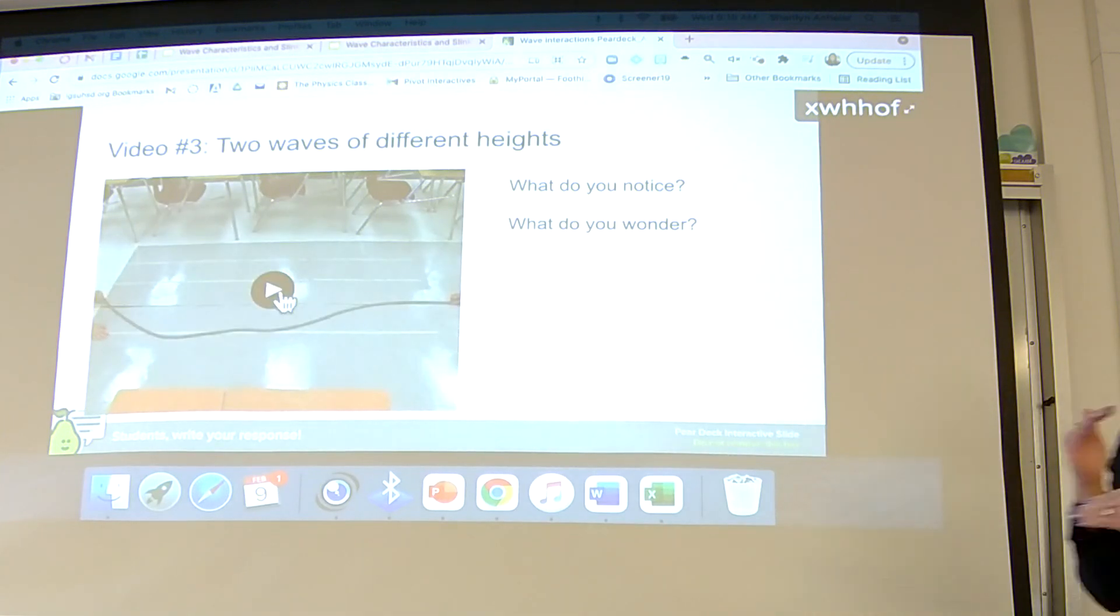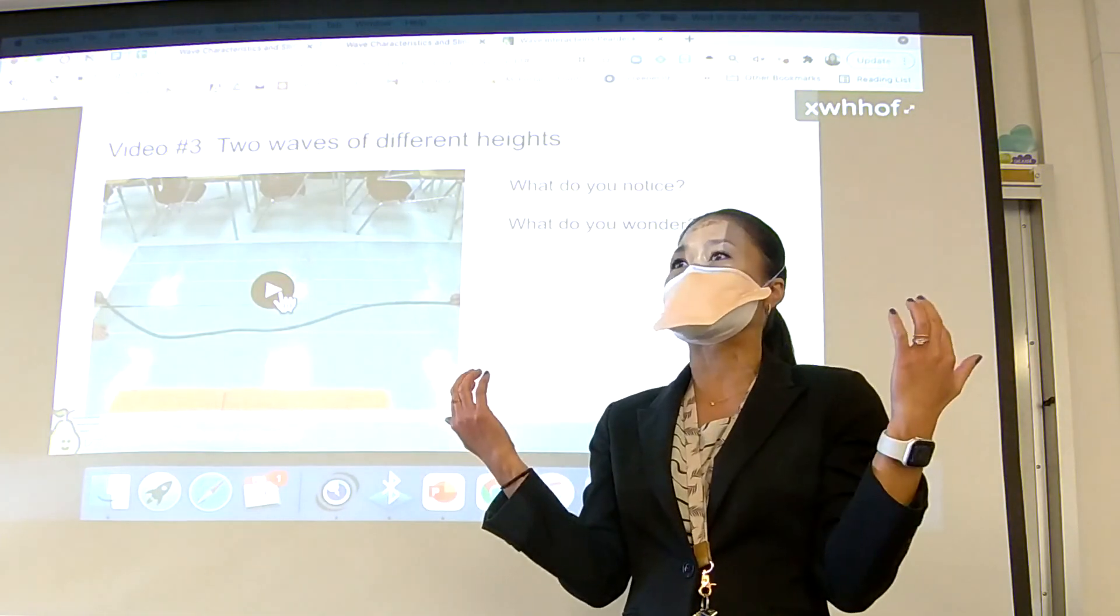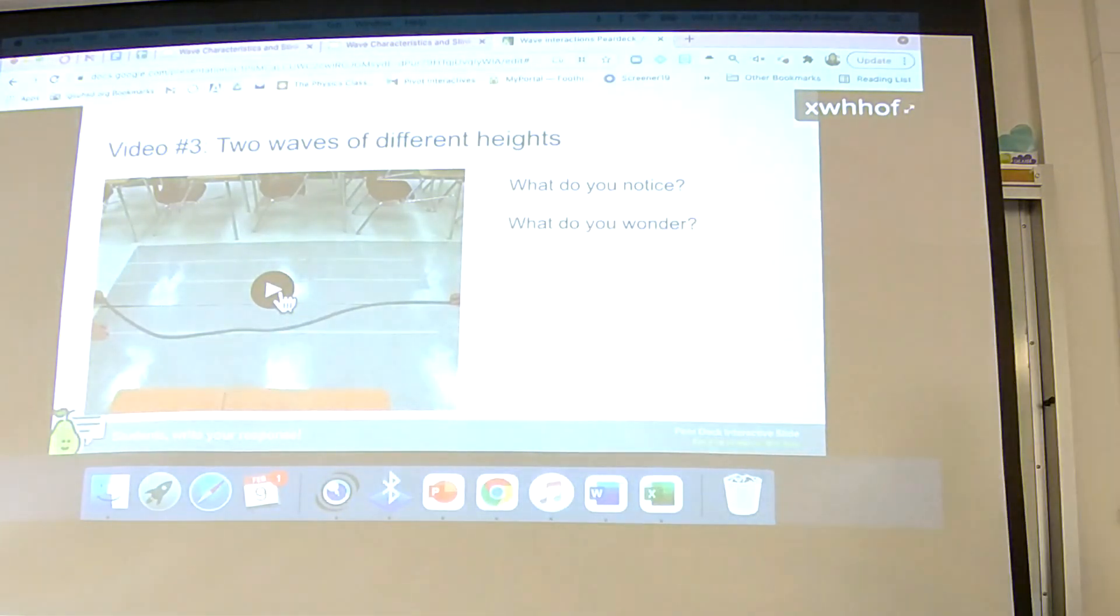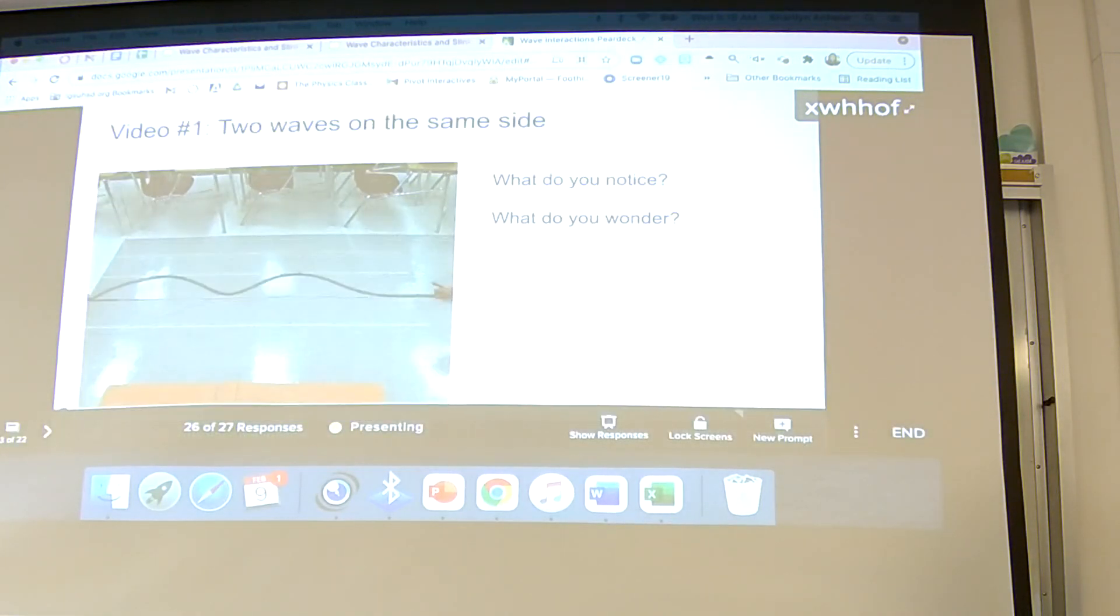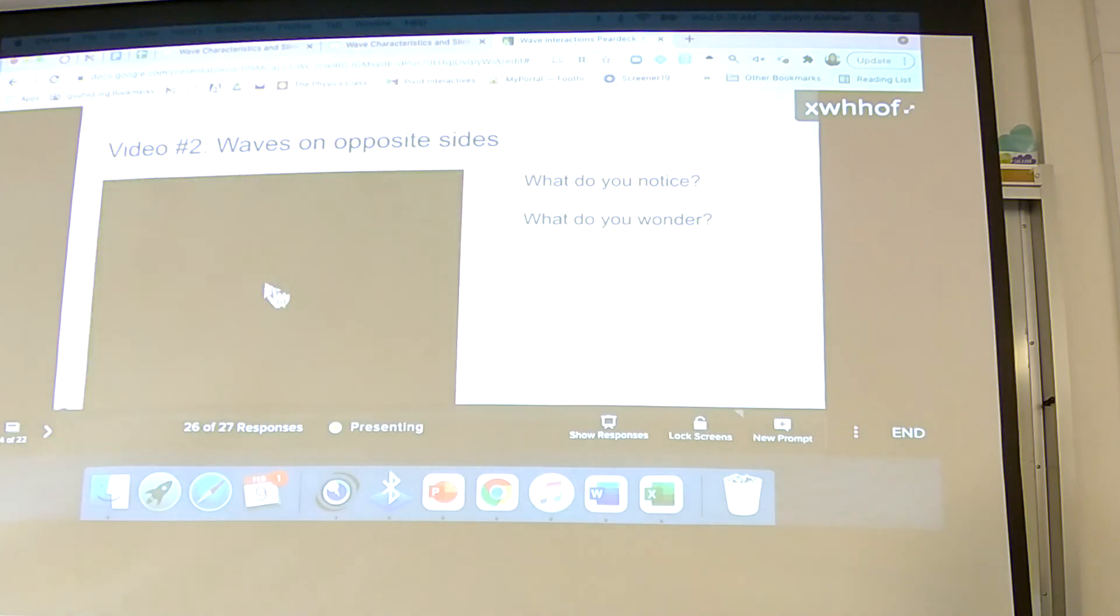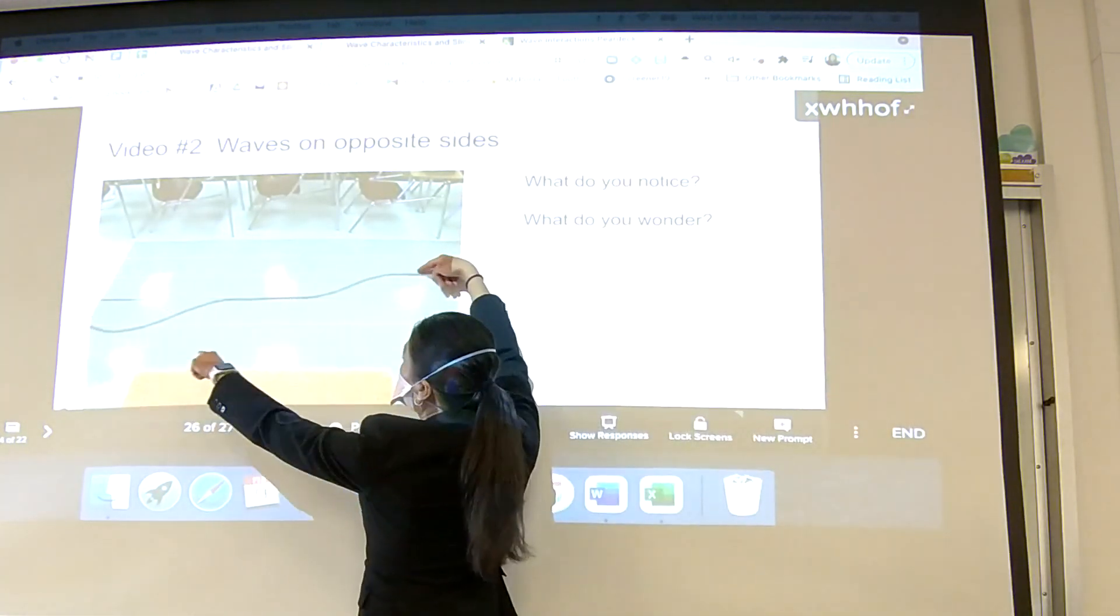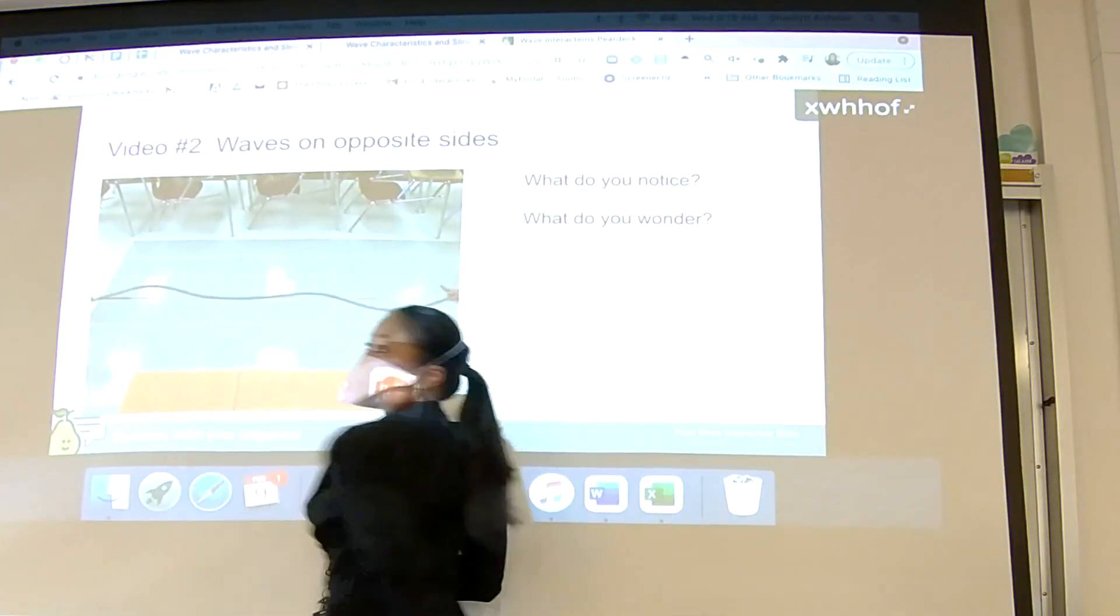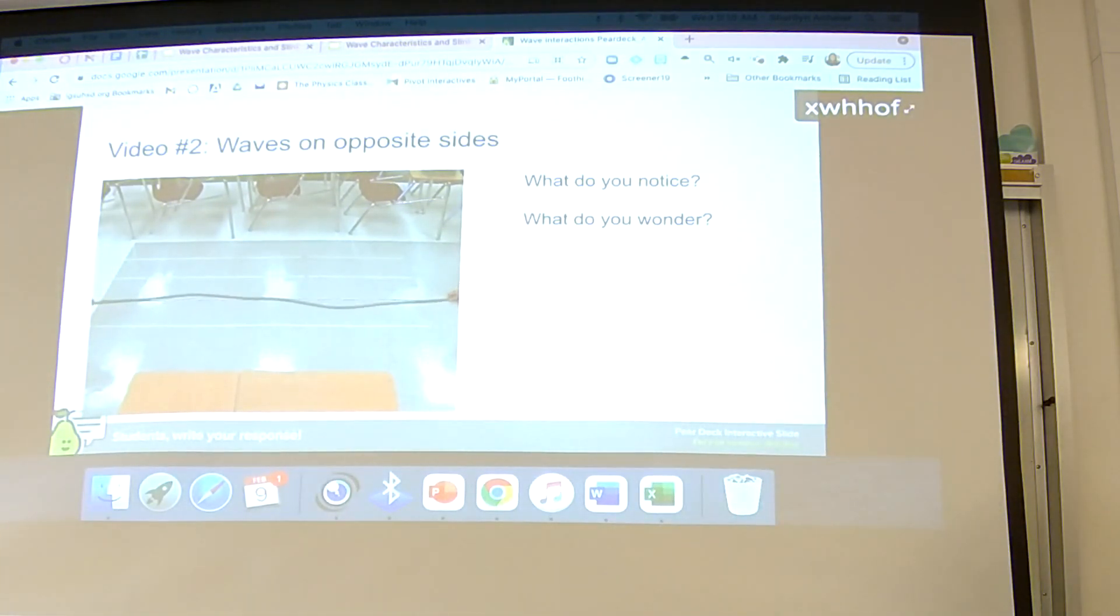In the previous one where students asked, well, it looks like they might be canceling out, but other students said they might be bouncing and then just flipping sides. If we know that they actually go through each other, then we would know from the previous wave that they're actually combining to cancel and then traveling through on the other side. So this is how wave interactions happen.